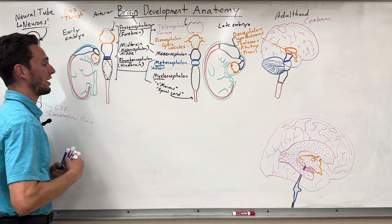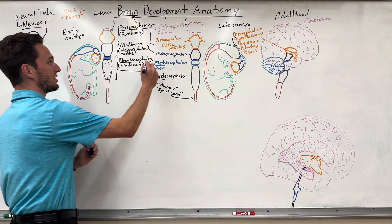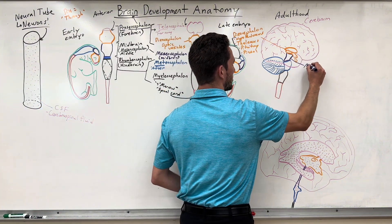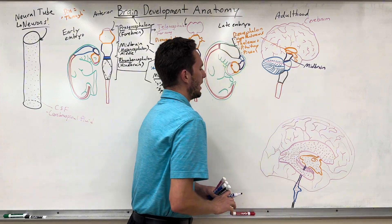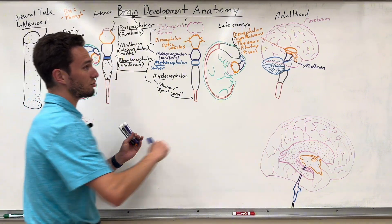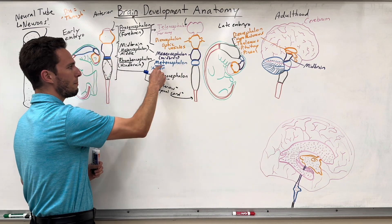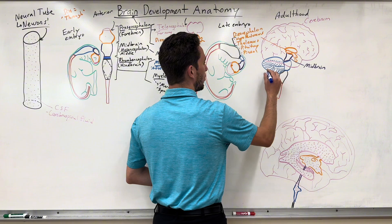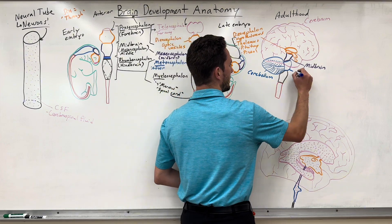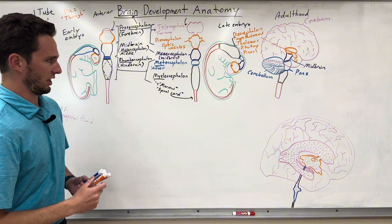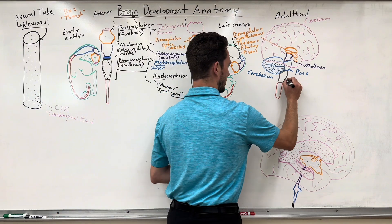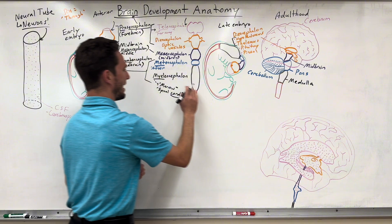The midbrain started as the midbrain, became the mesencephalon, and is still called the midbrain in adulthood — sometimes anatomists just get lazy. The metencephalon differentiates into two structures: posteriorly is the cerebellum, and anteriorly is the pons. And lastly, the medulla comes from the myelencephalon. The spinal cord remains relatively the same throughout the whole time.